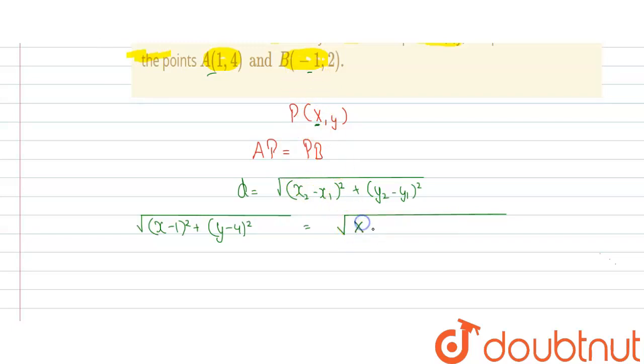So we will get x plus 1 whole square plus y2 minus y1 will be y minus 2 whole square.